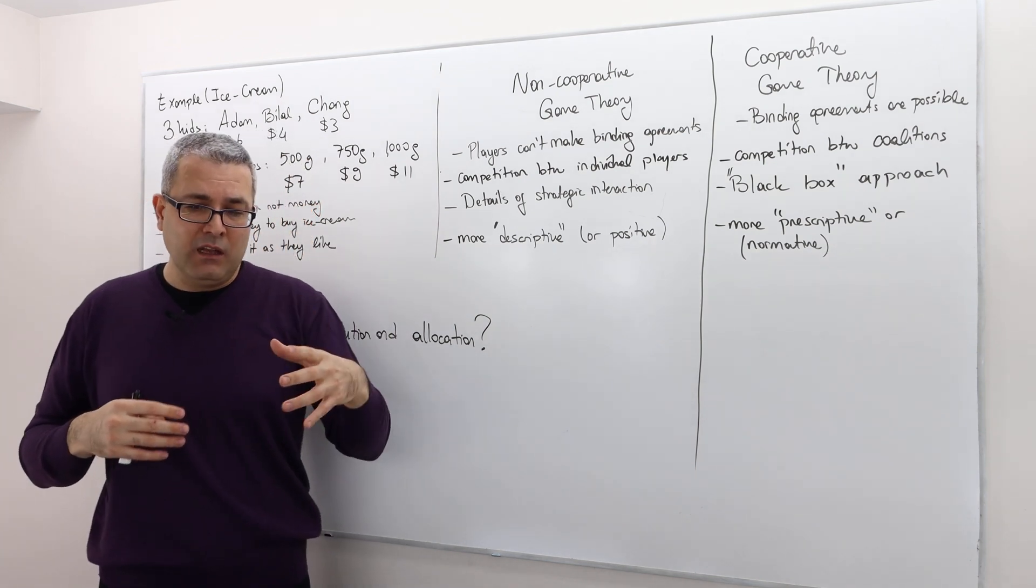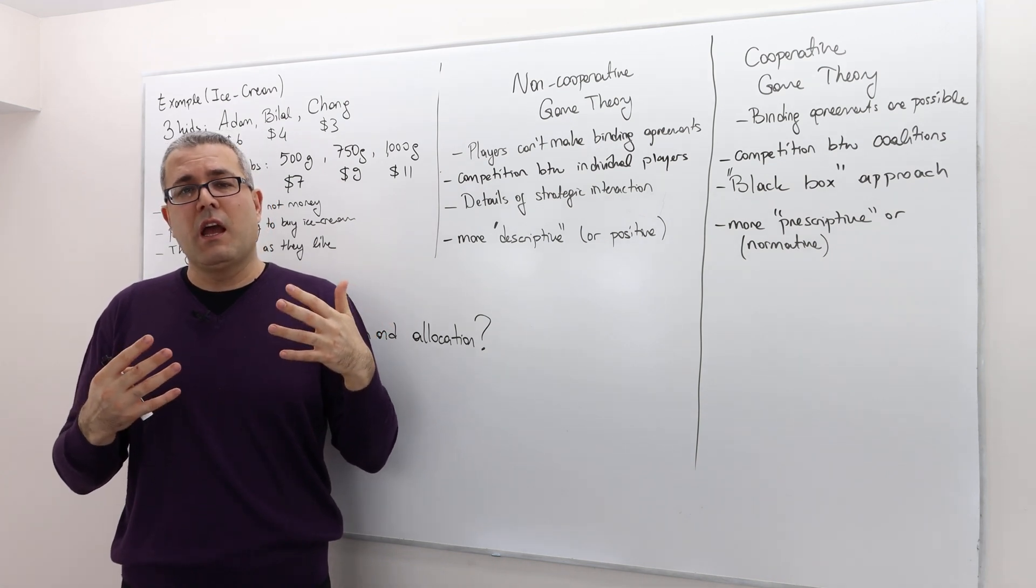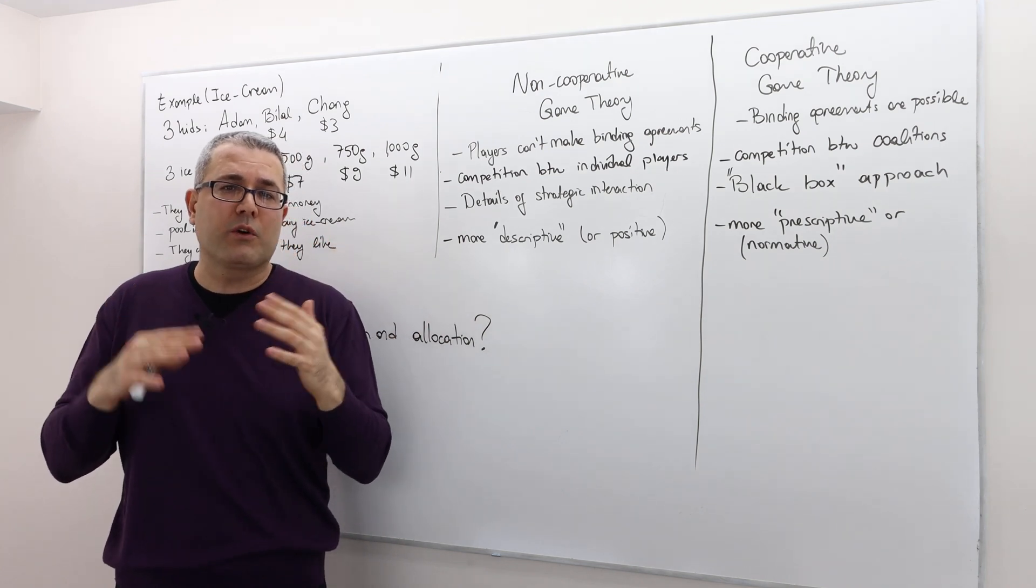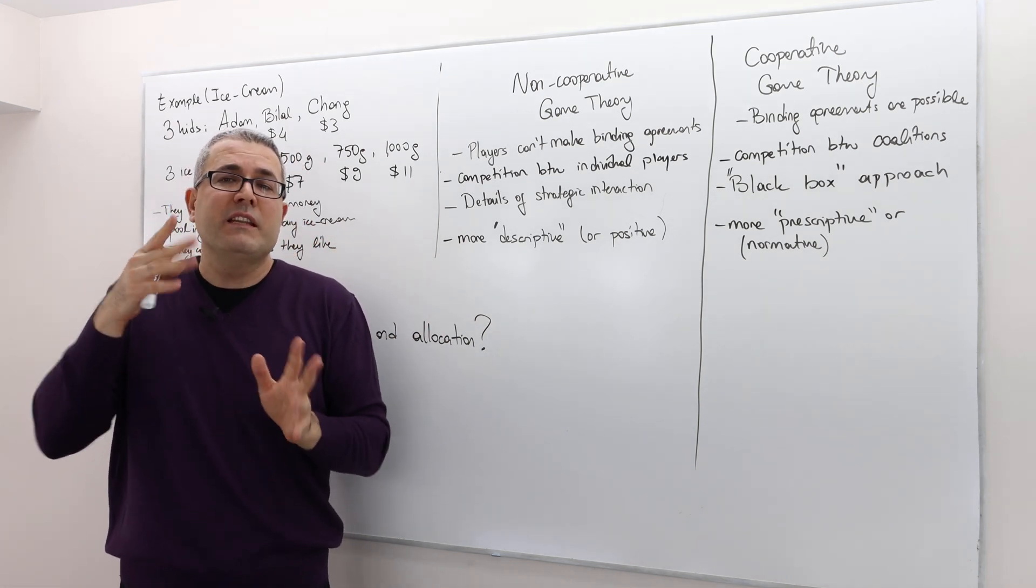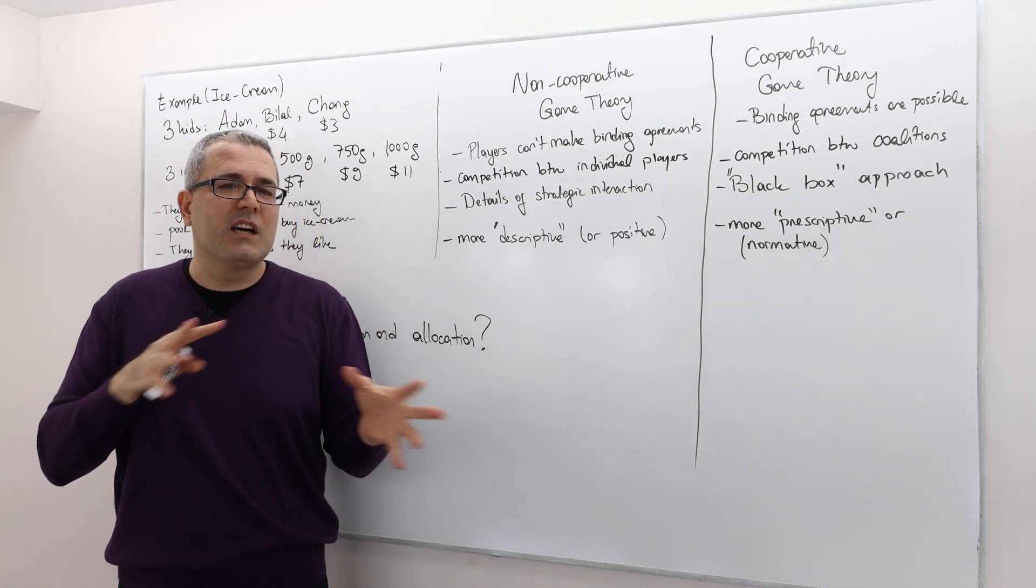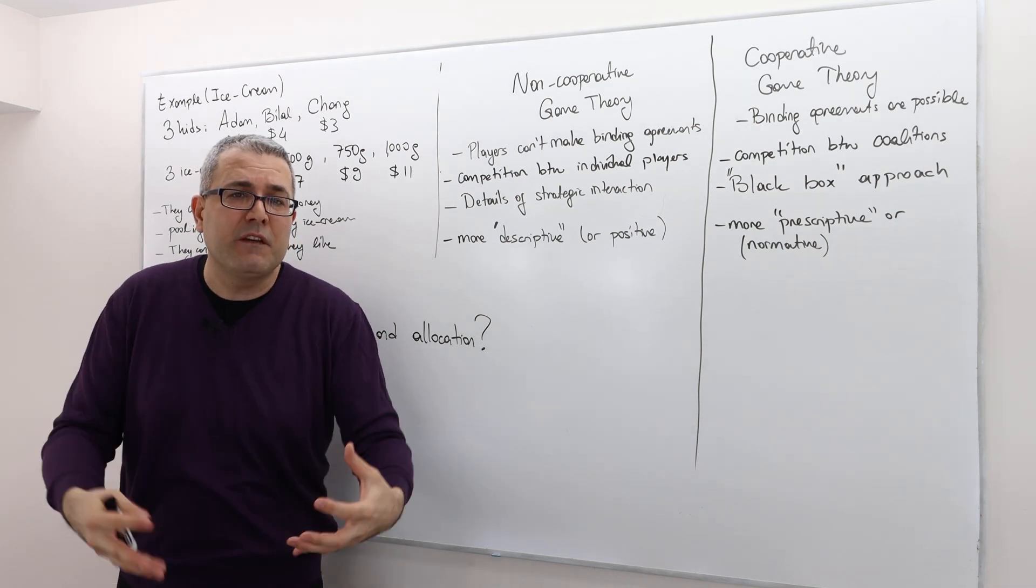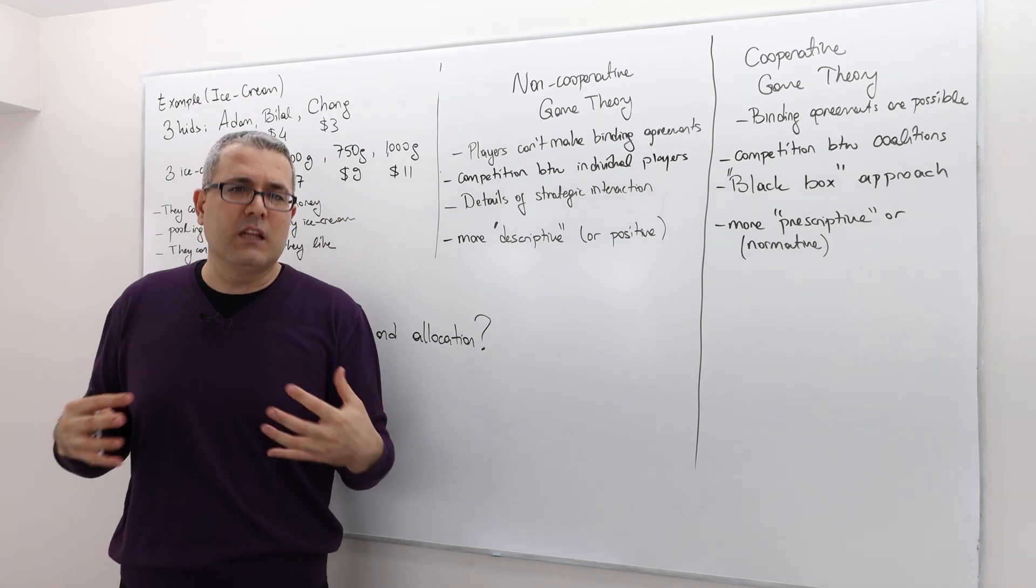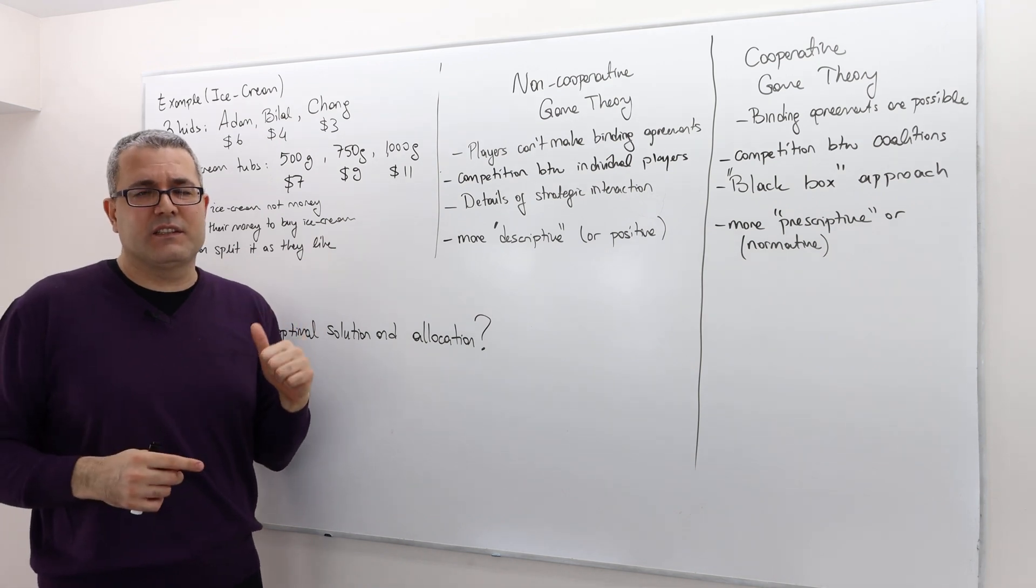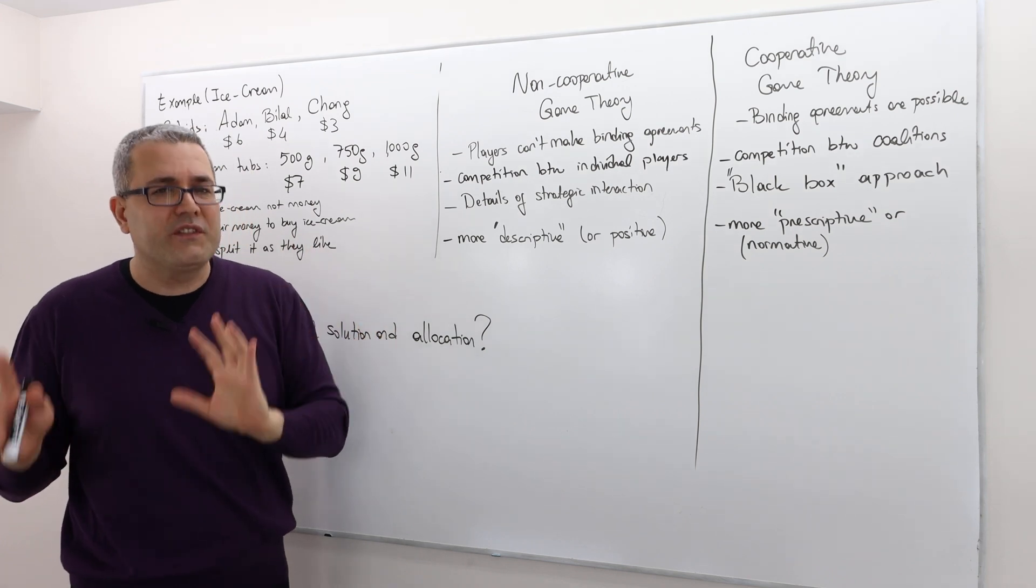So if you are, for example, analyzing firms competing with each other, and if you would like to answer questions like how firms change their prices or how they determine their quantities or how their quantities change depending on the other guy's quantities. Well, then, the strategies, the timing of the game, all that matters because you are tackling the specifics of the strategic environment. You're not only looking at the outcome. So in that instances, non-cooperative approach makes, would make more sense.